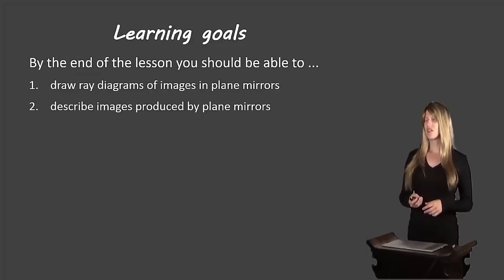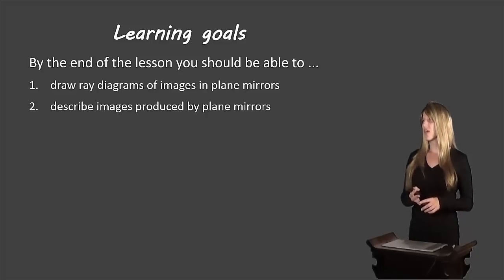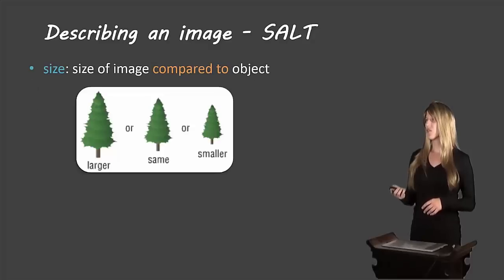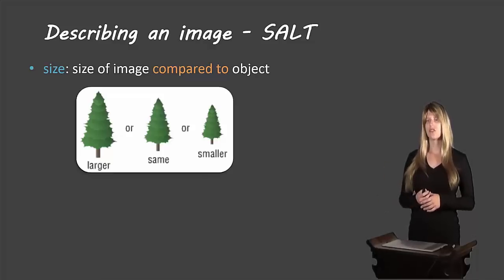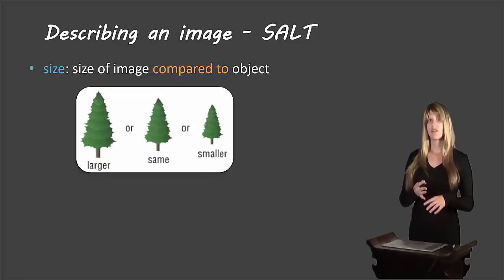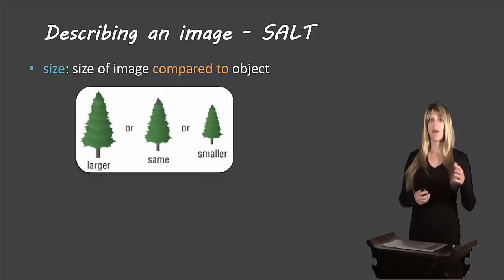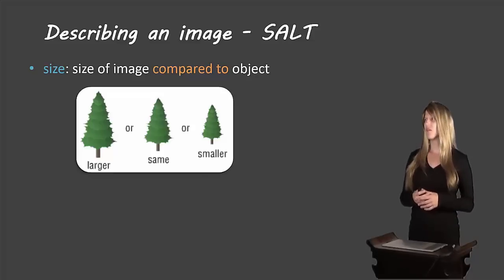We have two learning goals today. The first is to draw ray diagrams of images produced in plane mirrors, and the second is to describe images produced by plane mirrors. Before we get to our ray diagrams, we'll start by learning how to describe these images using an acronym called SALT, which helps us remember the four characteristics we'll use.